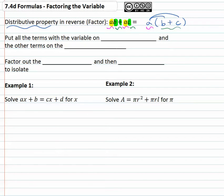This is going to be a nice trick to use when we've got the variable in two places. We can pull it out and get it in one place. Before we can do that though, we must put all the terms with the variable on one side, and all the other terms, anything that doesn't have the variable we want on the other side.